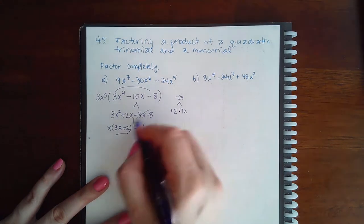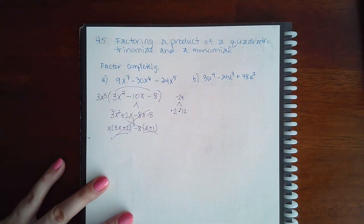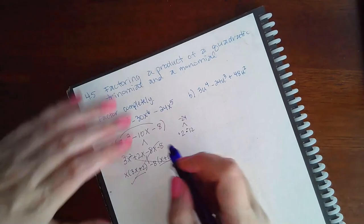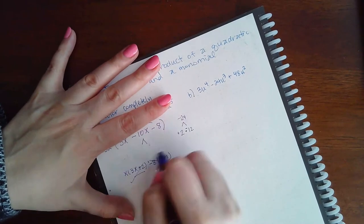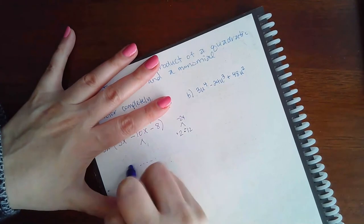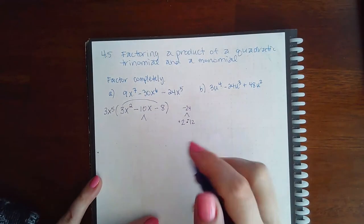Which means this cannot be factored using the AC method. Oh yes it can, it's because I made an error. I apologize. I wrote positive 2 minus 8 instead of positive 2 minus 12.